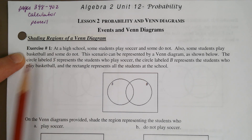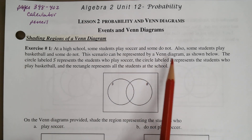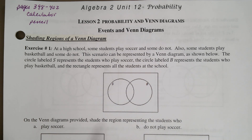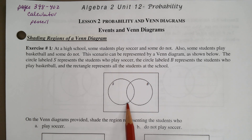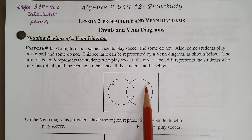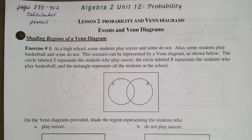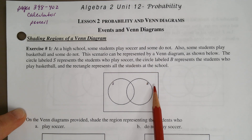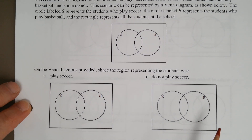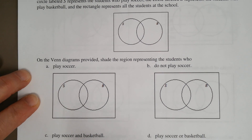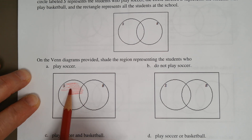Our first exercise: at a high school, some students play soccer and some do not; also some students play basketball and some do not. This scenario can be represented by a Venn diagram. The circle with the S is for students who play soccer, and the circle with the B is for students who play basketball. On the Venn diagrams provided, shade the region representing the students who play soccer — that would be circle S.